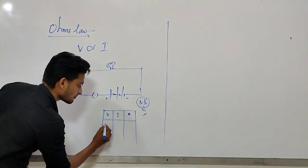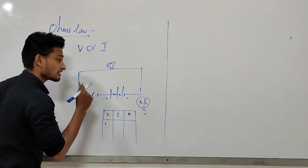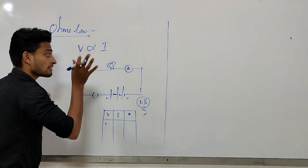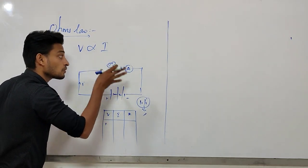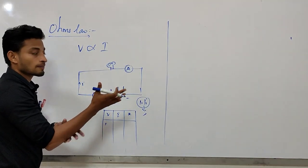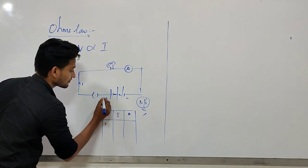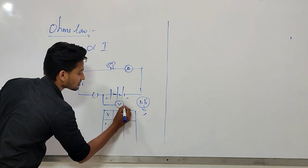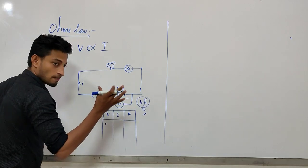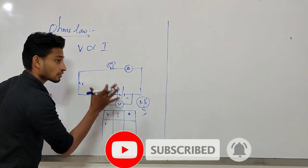First, we connect 1 volt potential difference and measure the current using an ammeter. An ammeter is a device used to measure current flowing through the conductor; it is connected in series. A voltmeter is a device used to measure potential difference; voltmeter connection is in parallel, because we connect it across the conductor.